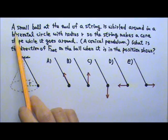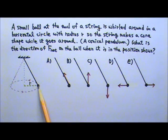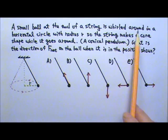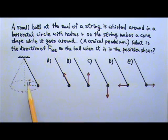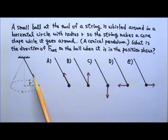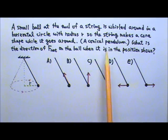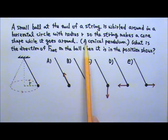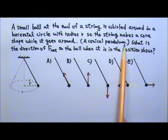In this problem, we have a small ball at the end of a string, and it is whirled around in a horizontal circle. So this is the horizontal circle it is in. The horizontal circle has a radius r. So the string makes a cone shape while it goes around, and it is called a conical pendulum.